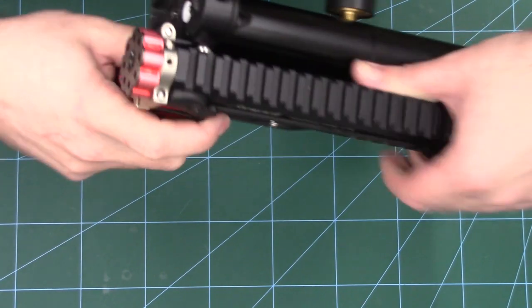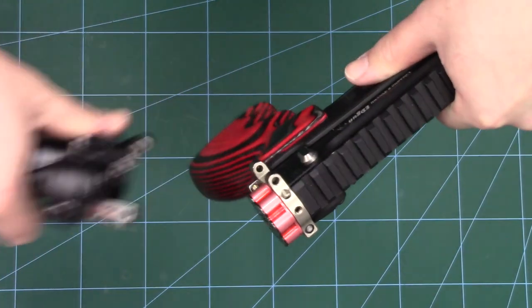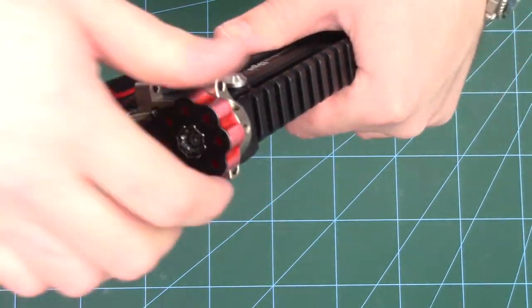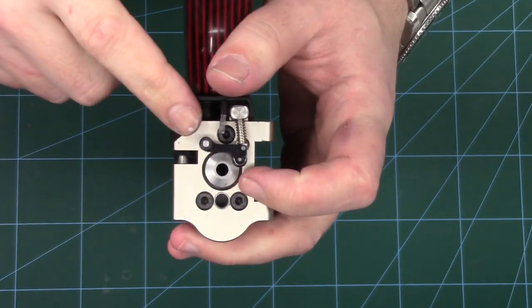First thing we're going to do is remove the bottle, and then we can take the magazine off. Then have a look at the back here.